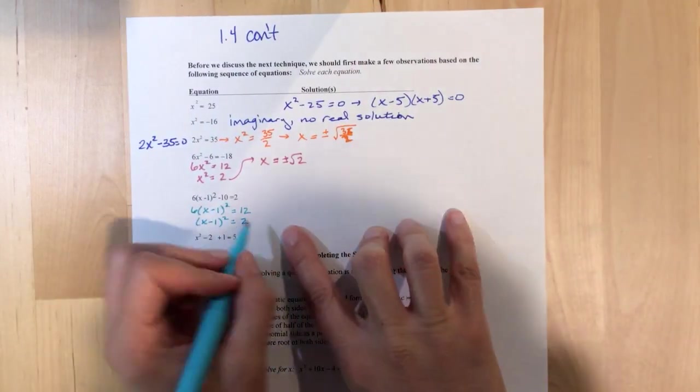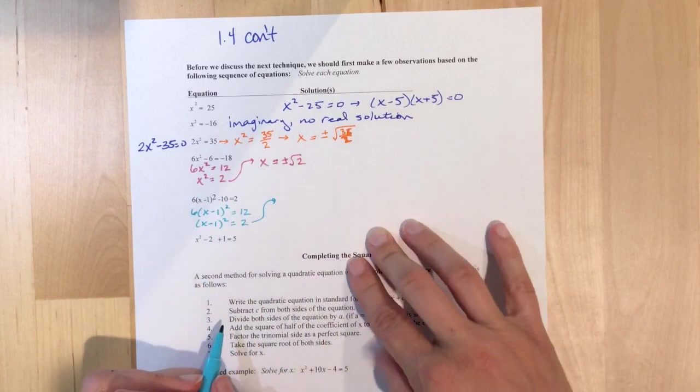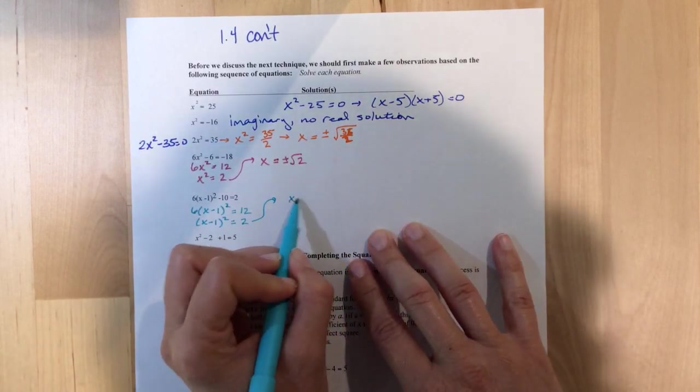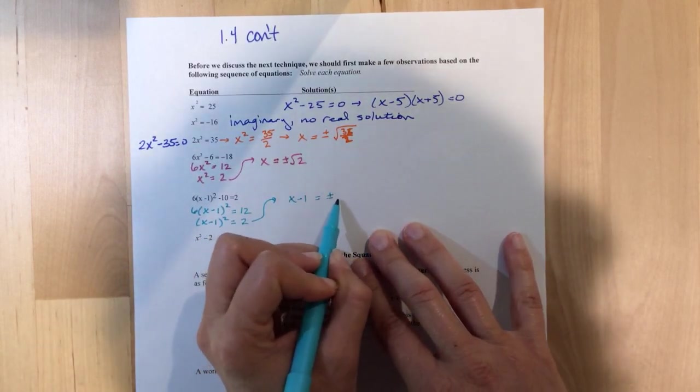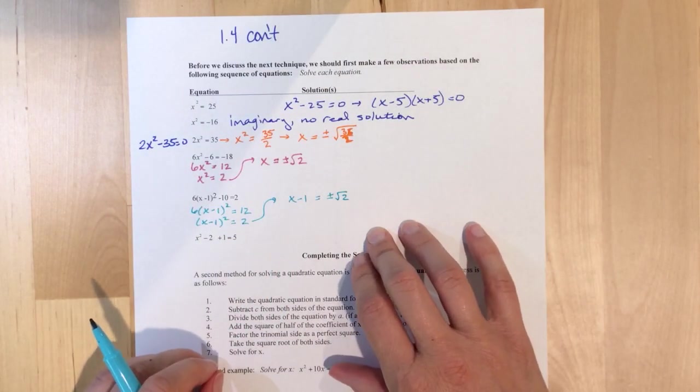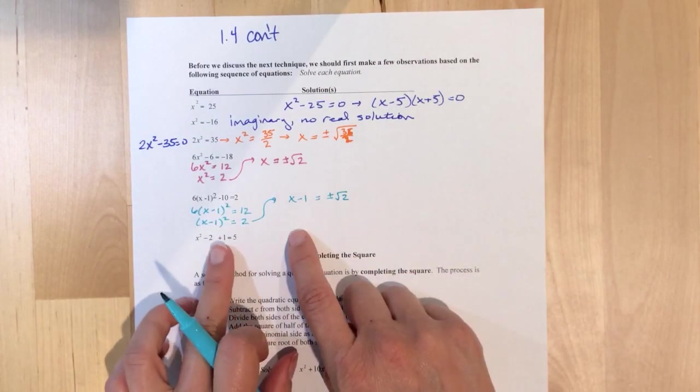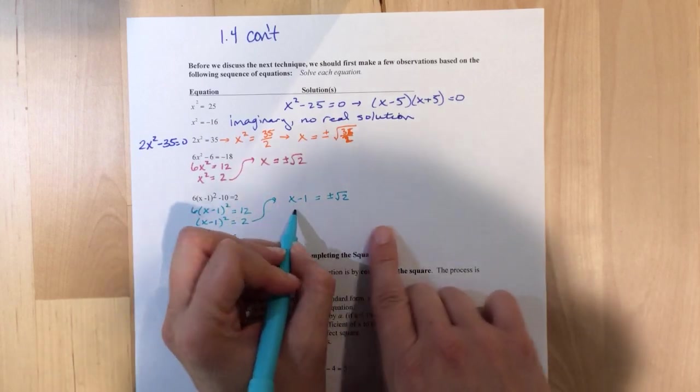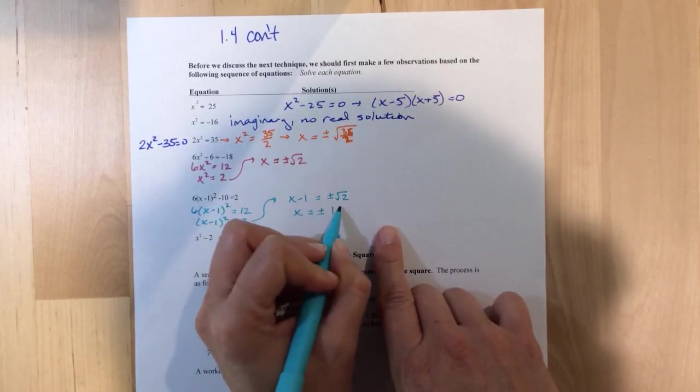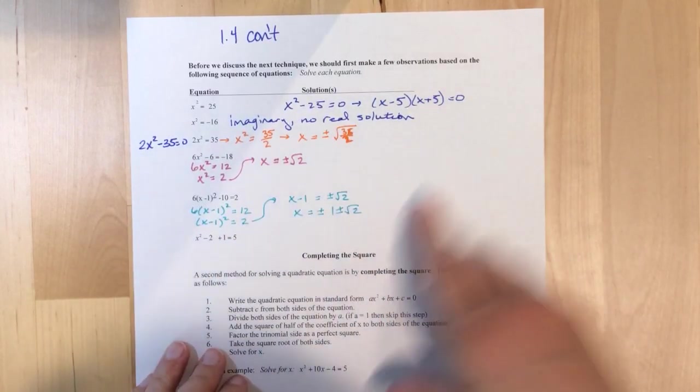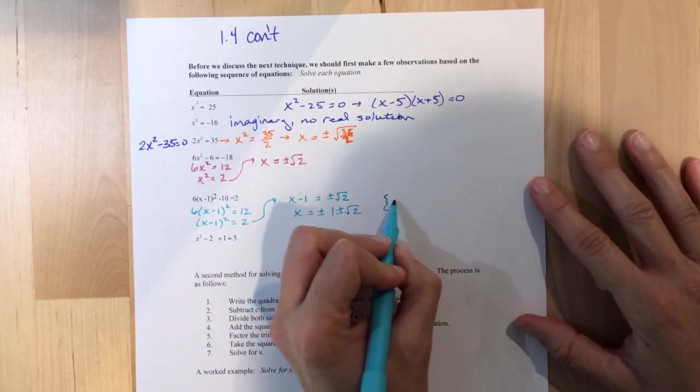And now, coming back up here, similar to the example above, I've got x minus 1 equals plus or minus the square root of 2. And then the last step, right, because now that we've dropped the parentheses, is to add the 1.